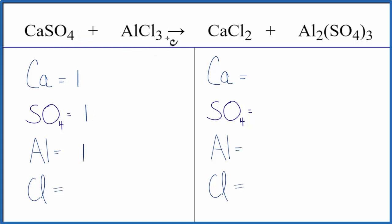We have one aluminum, and then we have three chlorine atoms. On the product side, we have our one calcium, and then we have three sulfates. We have two aluminums and two chlorine atoms.